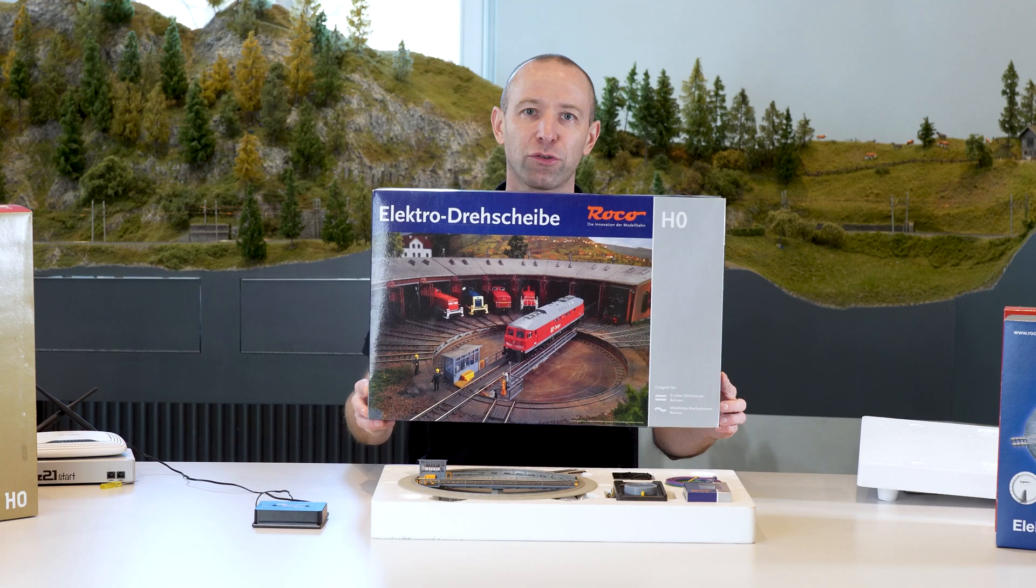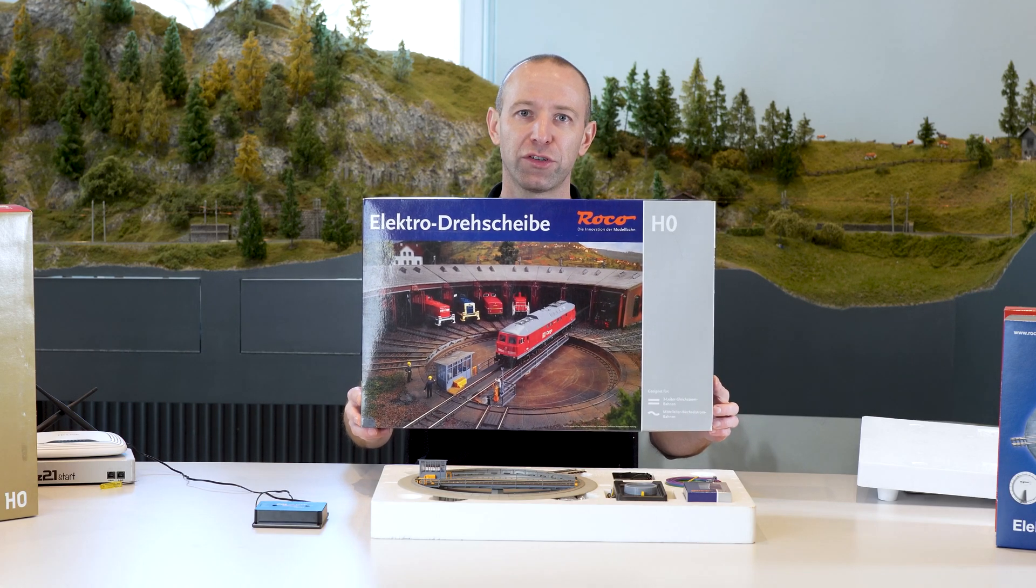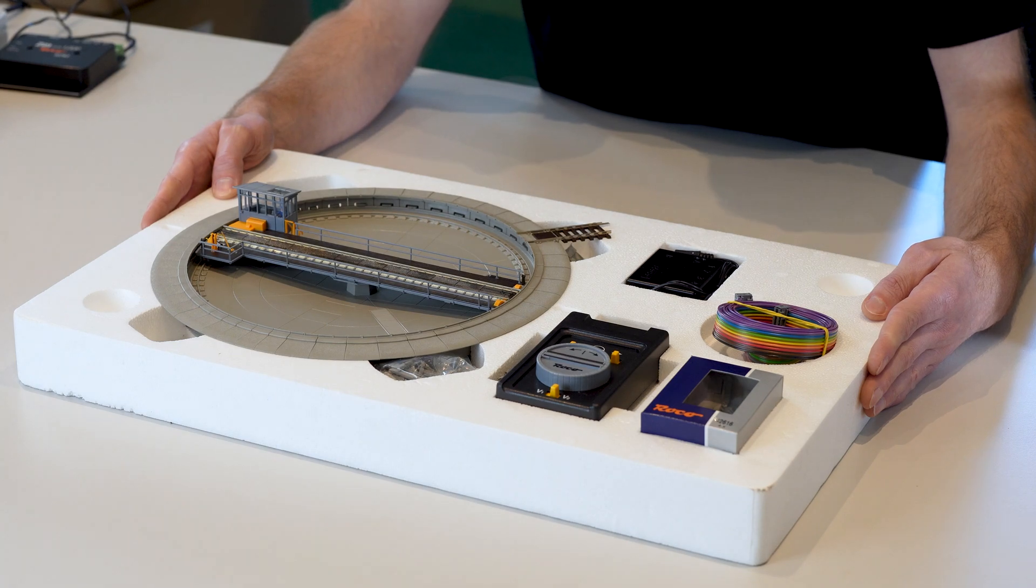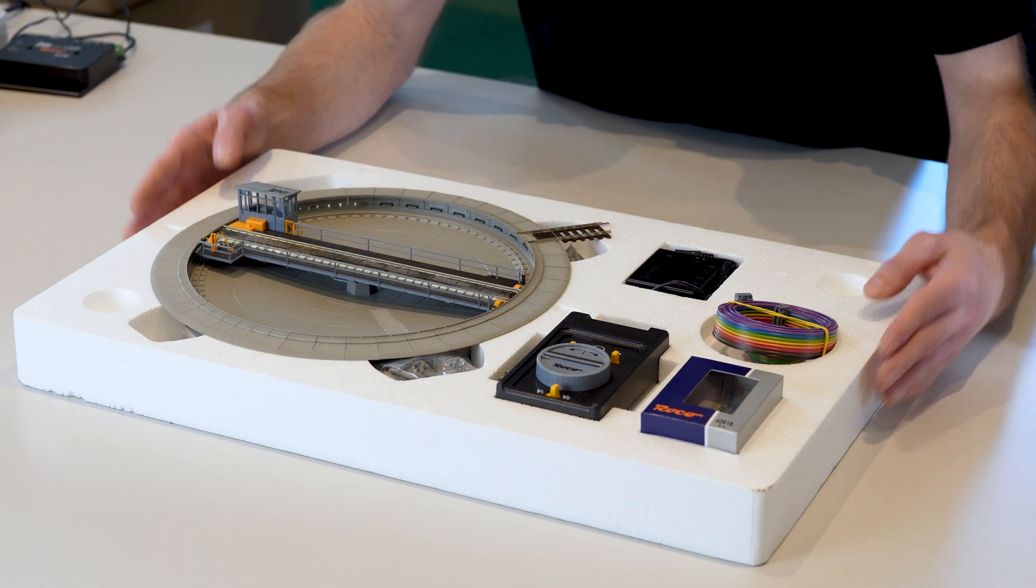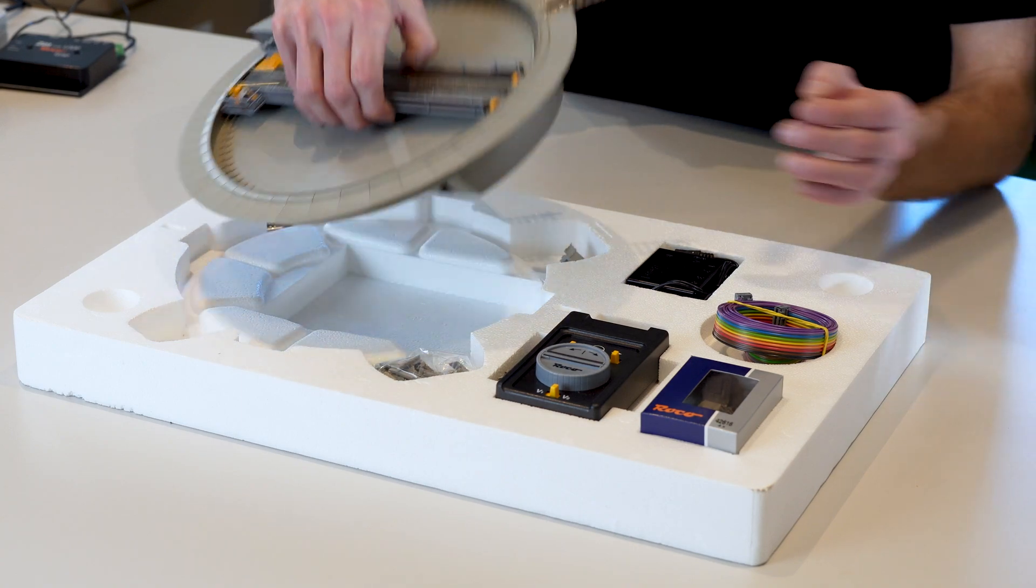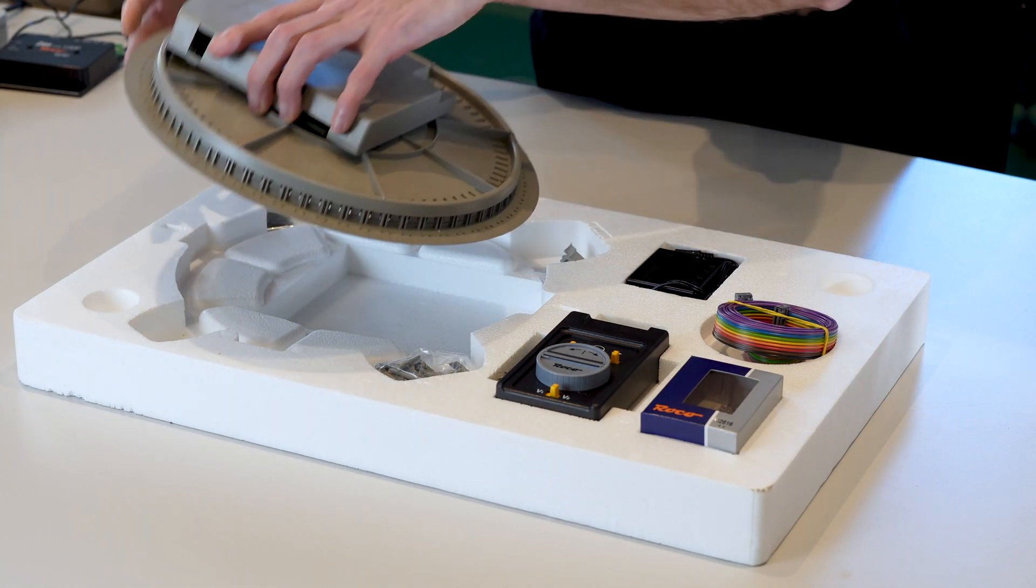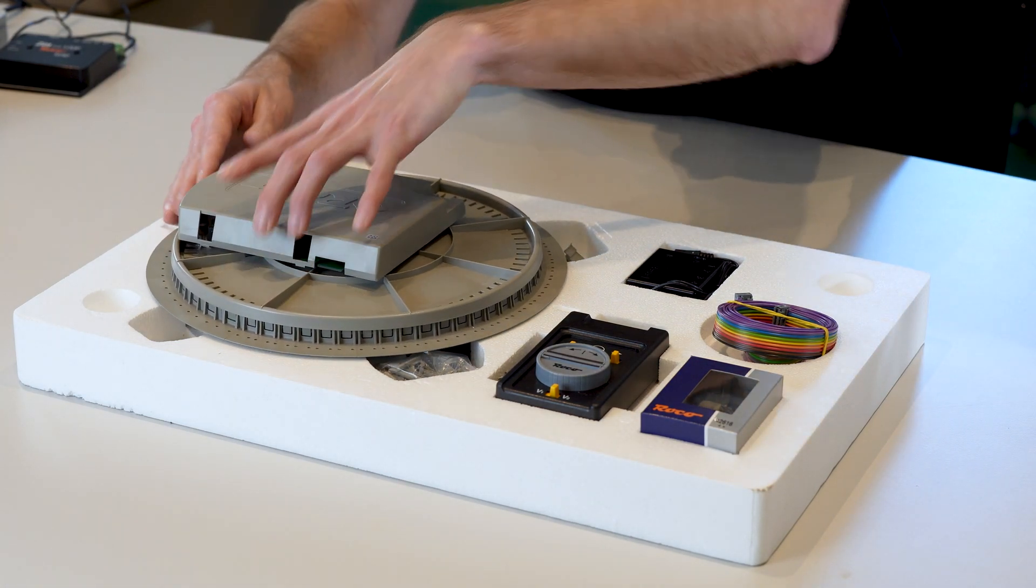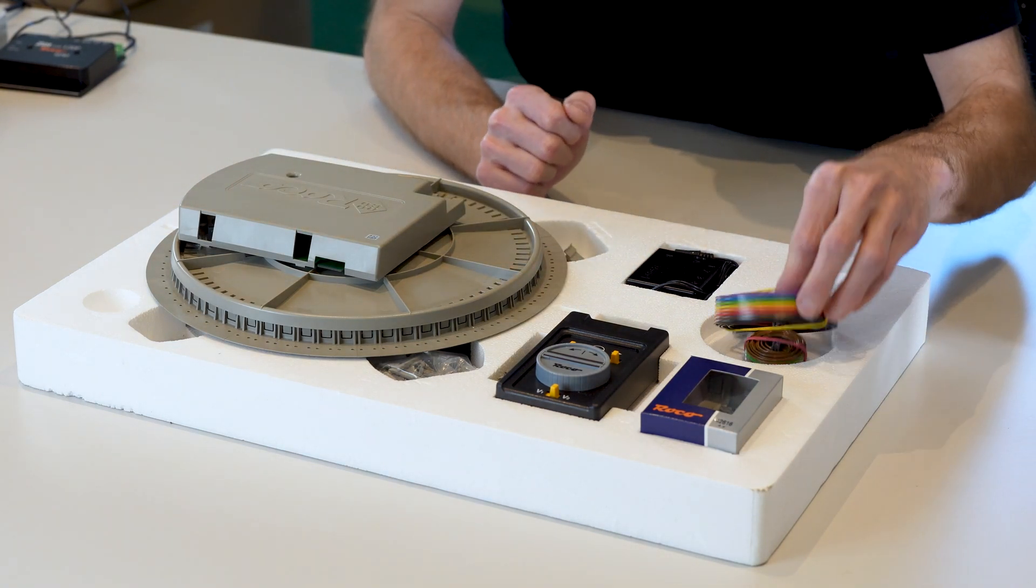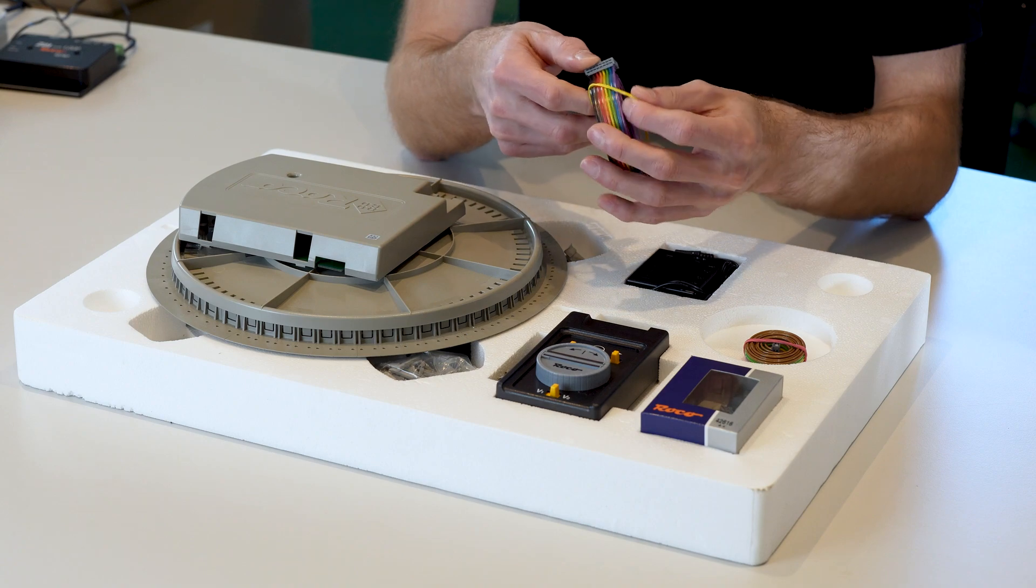Now let's look at the large Roco turntable, the 42615. With the large Roco turntable, the connection, I don't want to say it's more complex, but it's a little different. First, we take the turntable and turn it over. You can easily put it back in the packaging without damaging the cabin. Then take the large ribbon cable and connect it to the circuit board.